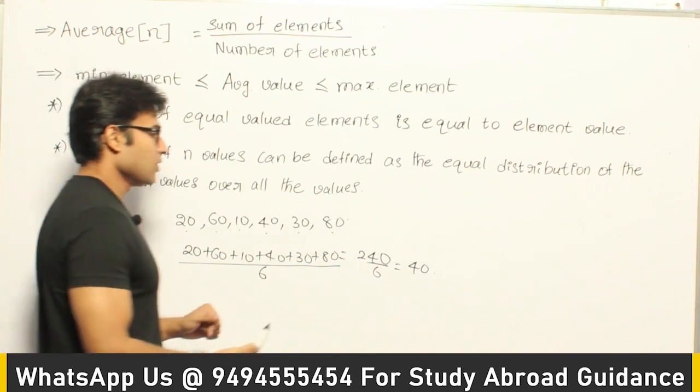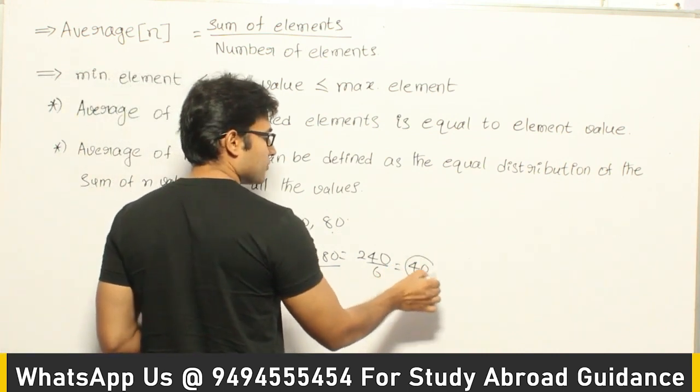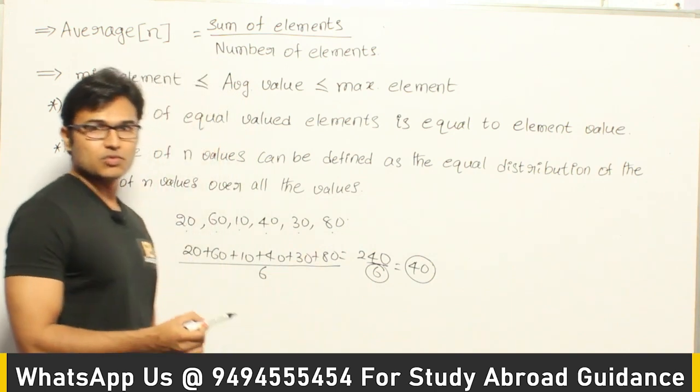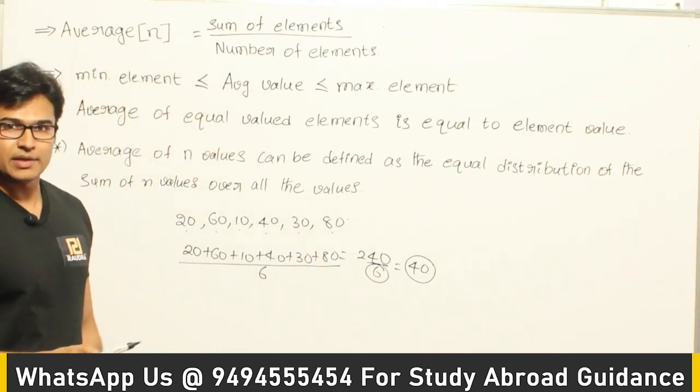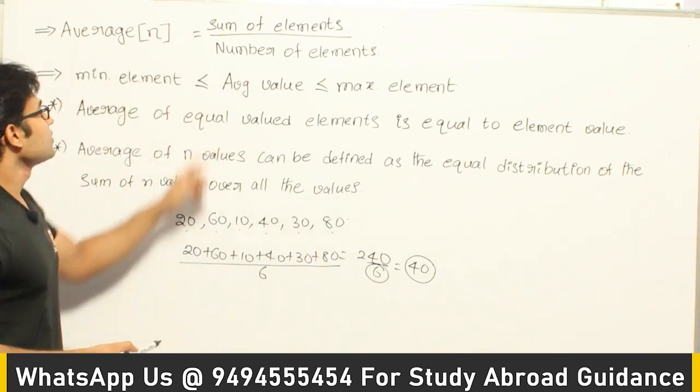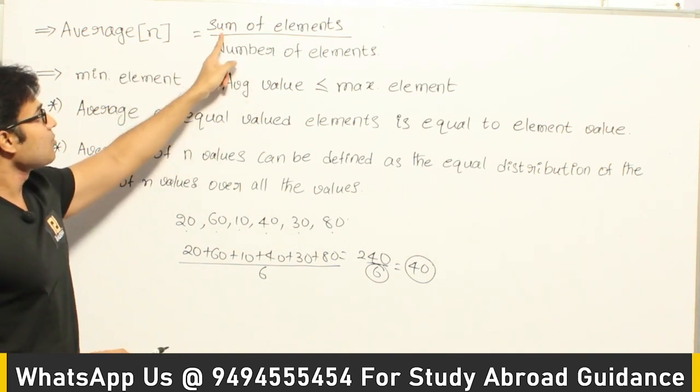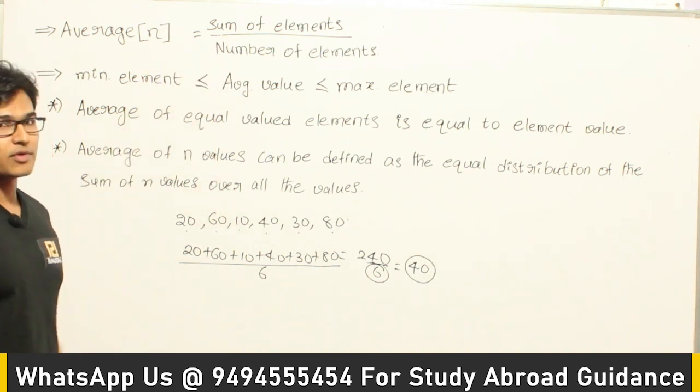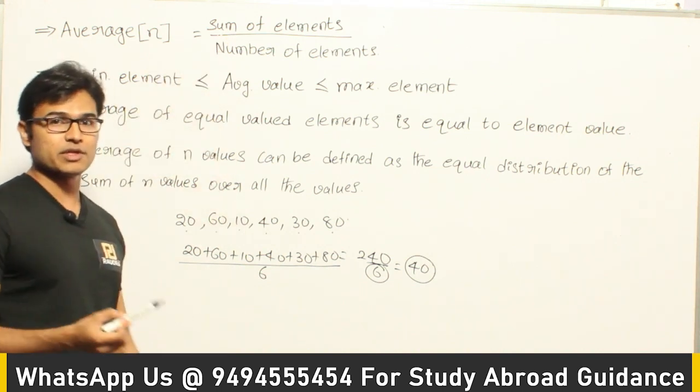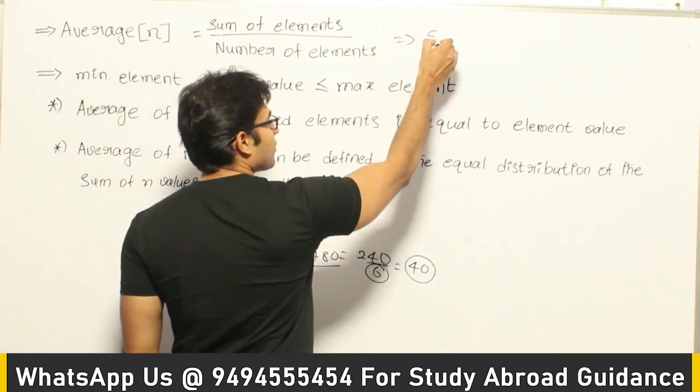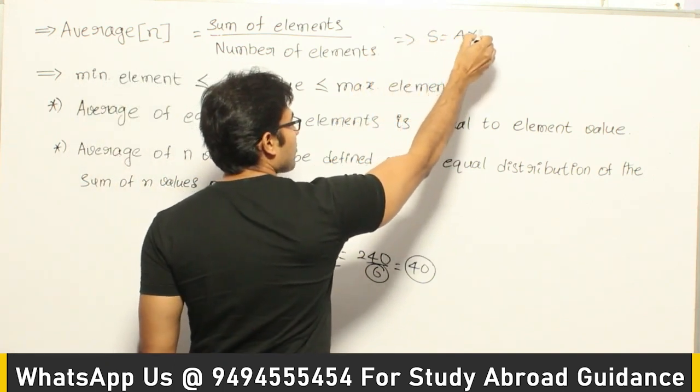Now one thing is we got the average as 40, and the number of items is 6. Given these two numbers we can find out the sum of elements as well. So the average is equal to sum of elements divided by number of elements. Similarly, sum of elements equal to average into number of elements. So sometimes we are going to use that formula as well.